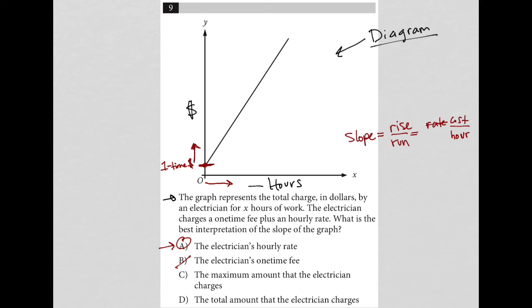Choice C, the maximum amount that the electrician charges? Definitely not, right? The maximum amount is not a part of this graph. So that's gone. Choice D, the total amount the electrician charges also gone.